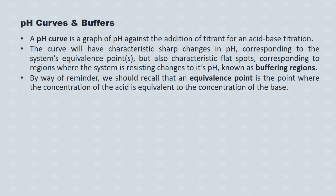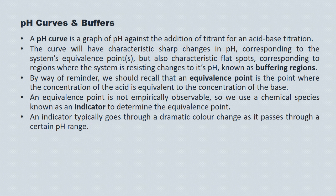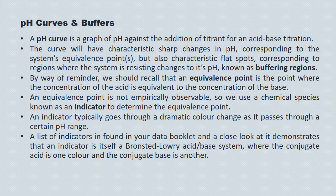By way of reminder, an equivalence point is the point where the concentration of the acid is equivalent to the concentration of the base in the system. An equivalence point is not empirically observable, so we use a chemical species known as an indicator to determine it. An indicator typically goes through a dramatic color change as it passes through a certain pH range, and a list of these indicators is found in your data booklet. An indicator is itself a Bronsted-Lowry acid-base system where the conjugate acid is one color and the conjugate base is another.